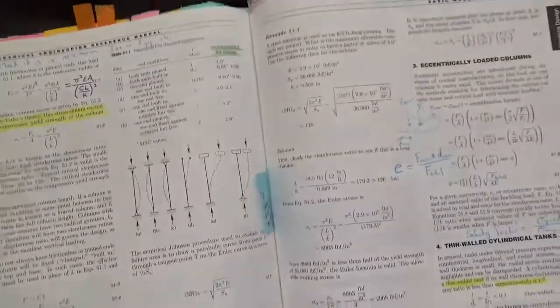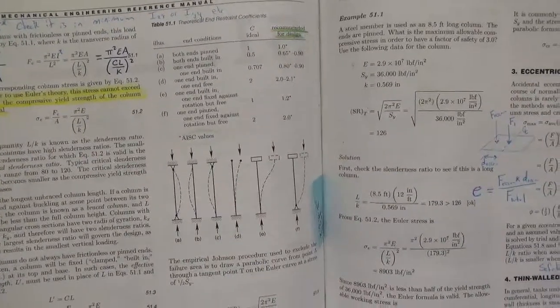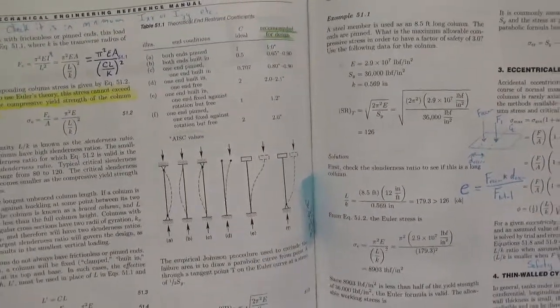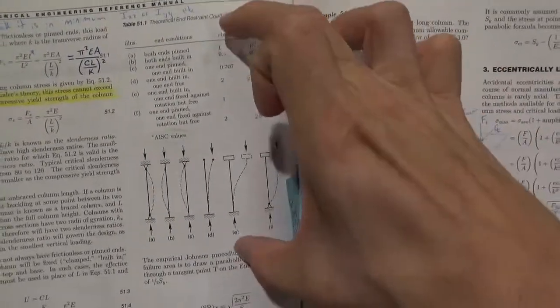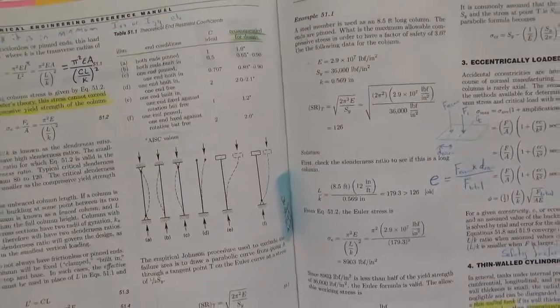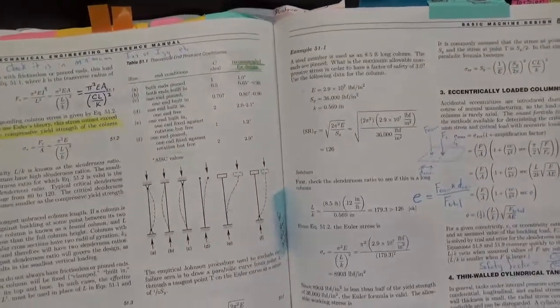Now because of the boundary conditions, or they're called n constant condition, or in some references they call them the effective length factor, these things can change. Just depends whether they're putting that constant on the top or the bottom.